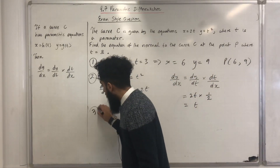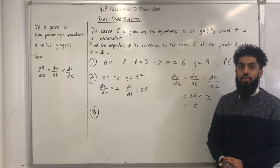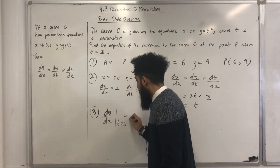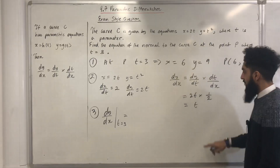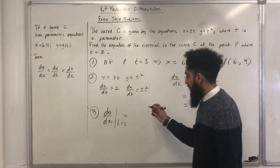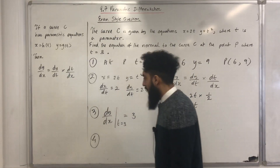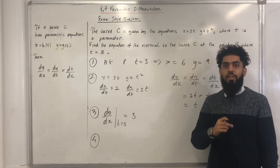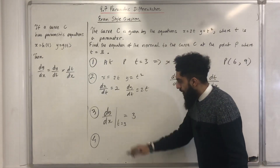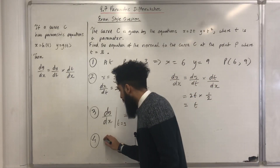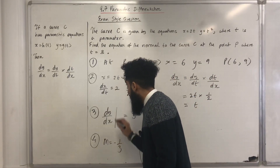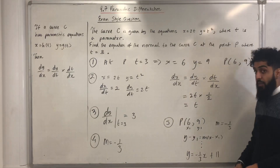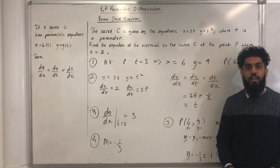I can work out the gradient of the tangent to curve C at point P, where t is equal to 3. Substituting t equal to 3 into dy over dx gives 3. Step number 4: the gradient of the normal is the negative reciprocal of the gradient of the tangent. The negative reciprocal of 3 is minus 1 over 3. So the gradient of the normal, m, is minus 1 over 3. The final step is to substitute x1, y1 and m into y minus y1 equal m bracket x minus x1, rearrange, and get y equal minus 1 over 3x plus 11.